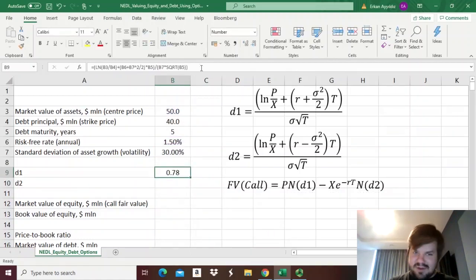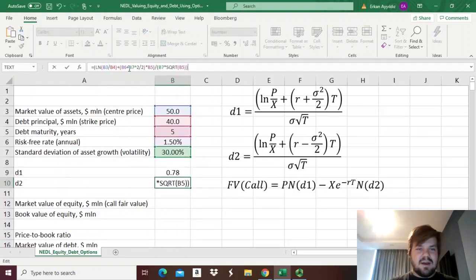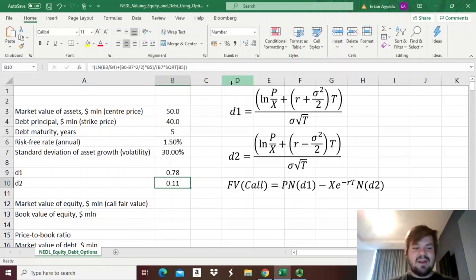We enforce this formula, we get 0.78, and then we can just copy it across to d2, and here, convert this plus into a minus, because that's the representation of the downside, and that is equal to 0.11.